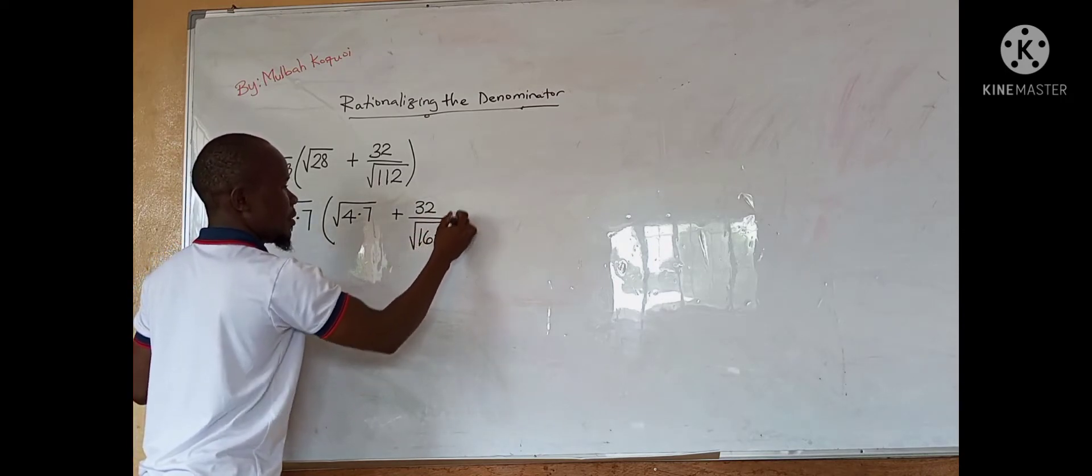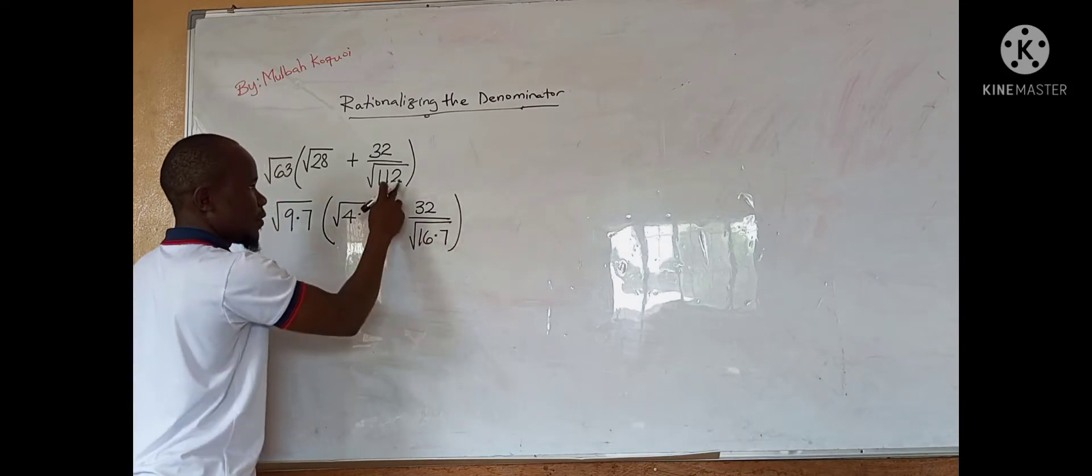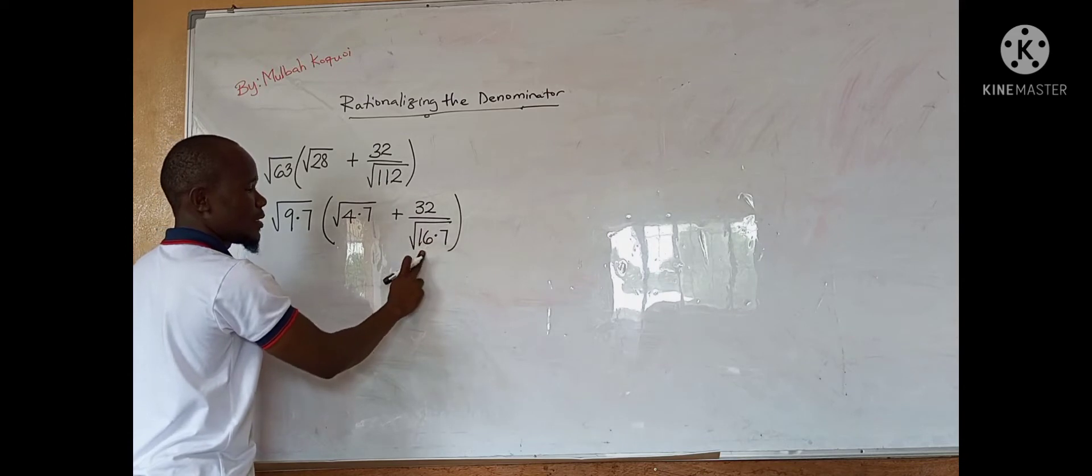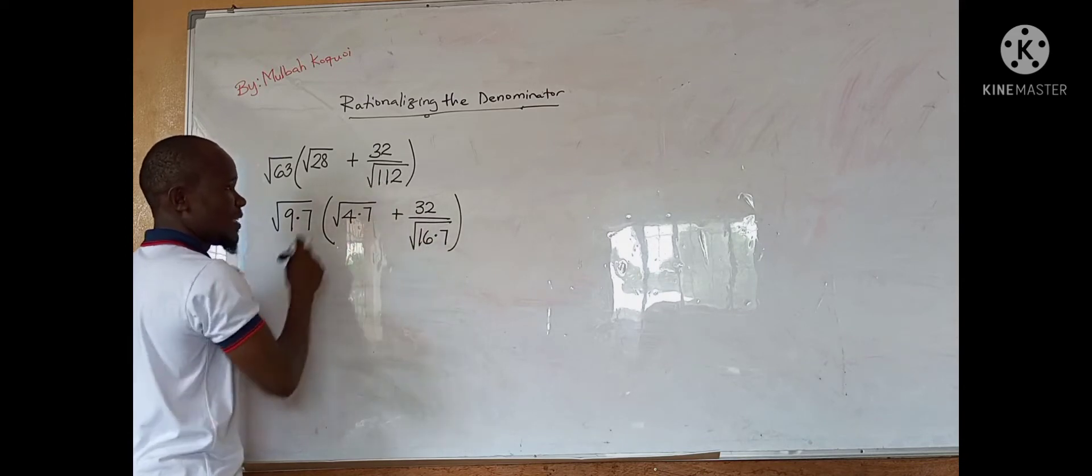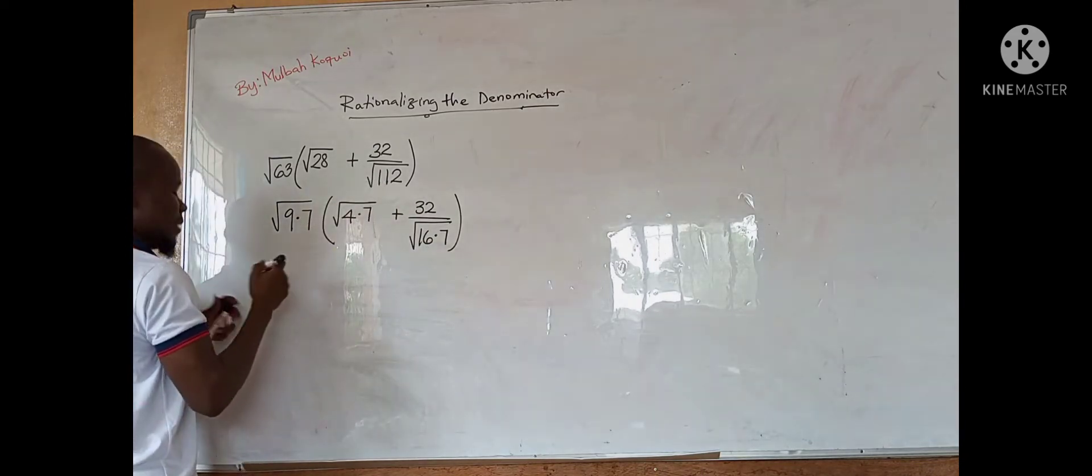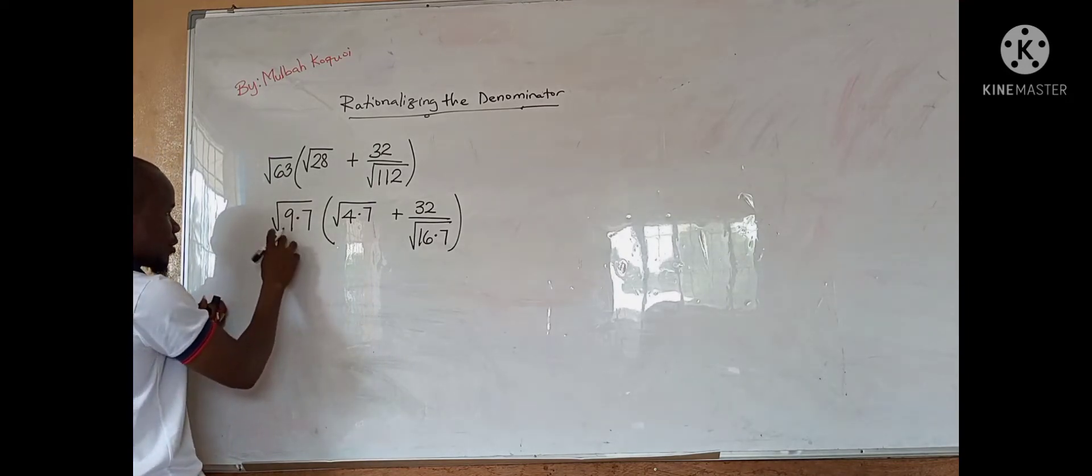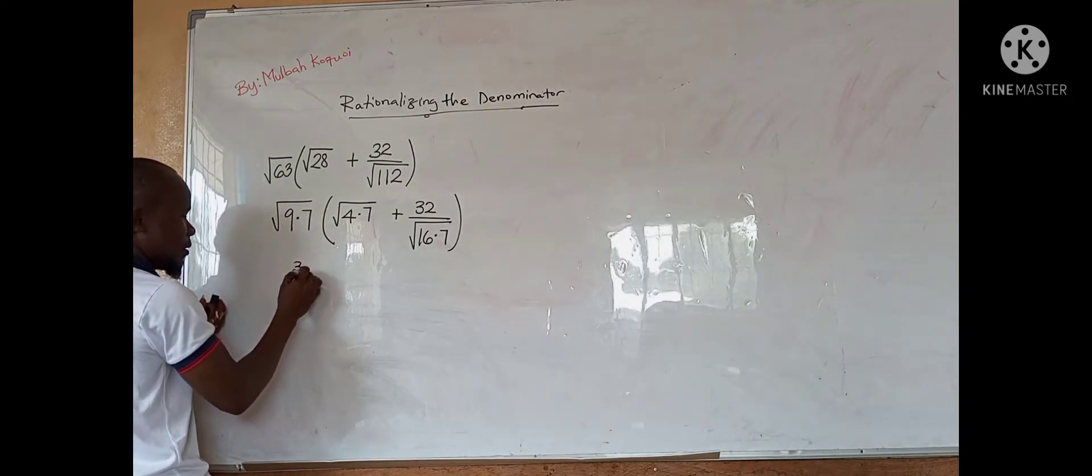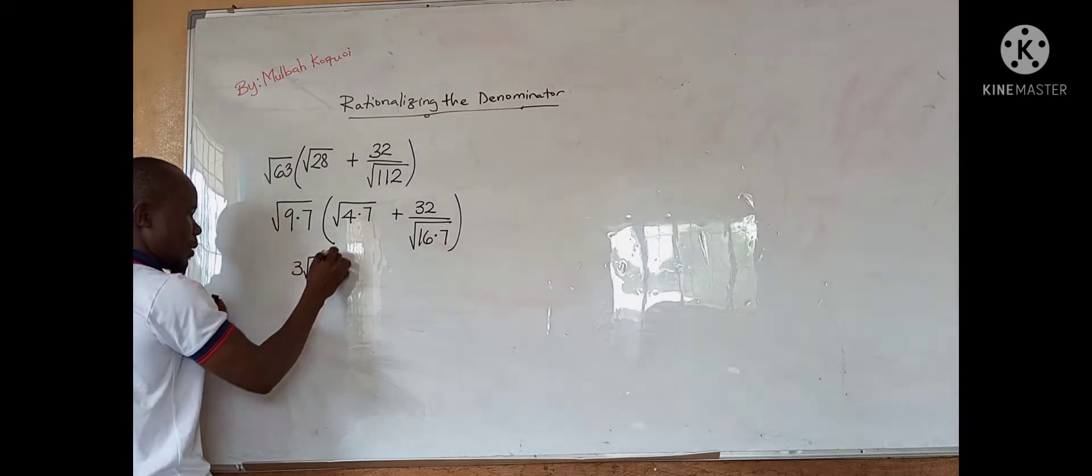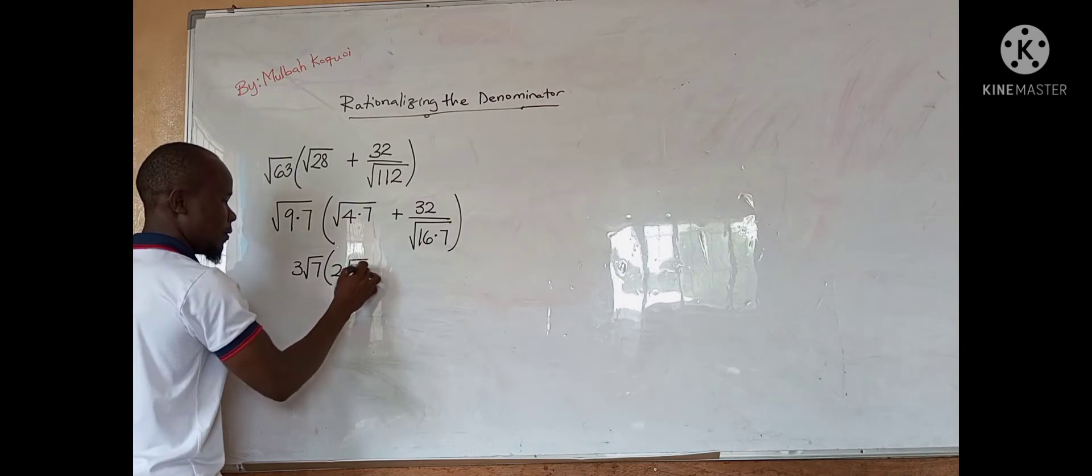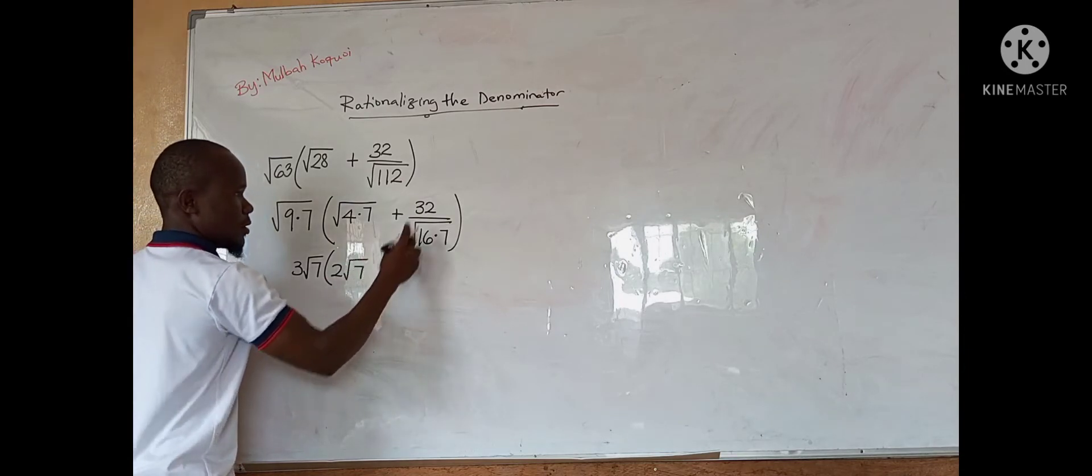So it means that looking right here, we can have the square root of 9 is 3 root of 7, and the square root of 4 is 2 root of 7, plus 32 over the denominator.